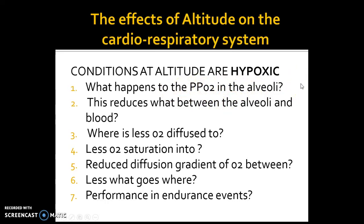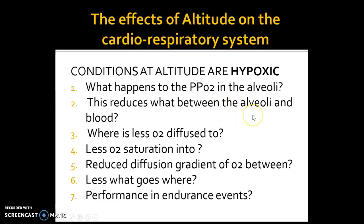That is the start point of our gaseous exchange process. Because there is a lower partial pressure of oxygen in the alveoli, this reduces the diffusion gradient between the alveoli and blood — that is a reduced or decreased diffusion gradient. Normally, the partial pressure of oxygen in the alveoli would be high. So there is less oxygen diffused into the blood or haemoglobin, and this has the consequent effect of a decreased oxygen saturation to haemoglobin, or oxygen association to haemoglobin.